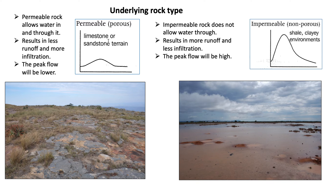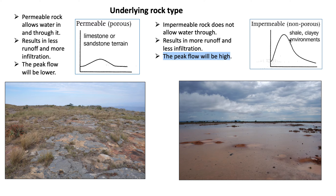Looking at the underlying rock type: a permeable rock allows water in and through it, resulting in less runoff and more infiltration, so the peak flow will be lower. Examples of permeable or porous rock include limestone or sandstone terrain. Impermeable or non-porous underlying rock — more shale or clay type environments — does not allow water through, resulting in more runoff, less infiltration, and a high peak flow.